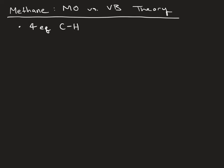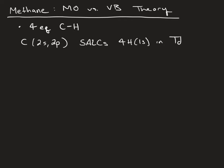We're going to do this in much the same way that we've done for other molecular orbital diagrams, where we're going to use the carbon 2s and 2p atomic orbitals and overlap them with SALCs generated from the four hydrogen 1s orbitals in Td symmetry.